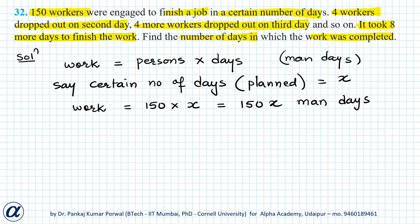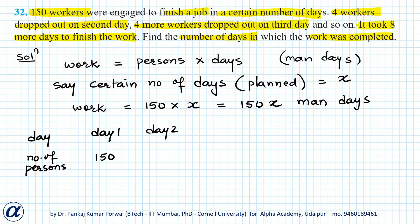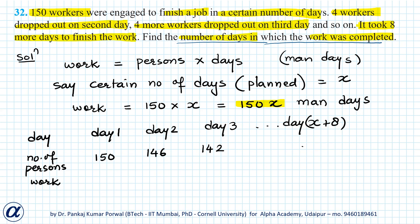Because the workers started dropping out, the situation becomes a little complicated. We have day and number of persons working on that day: on day one there were 150 workers; on day two, because four workers dropped out, there were only 146 workers; on day three, again four workers dropped out, so there were only 142 workers. This continued for x plus eight days, because it took eight more days than planned to finish the work.